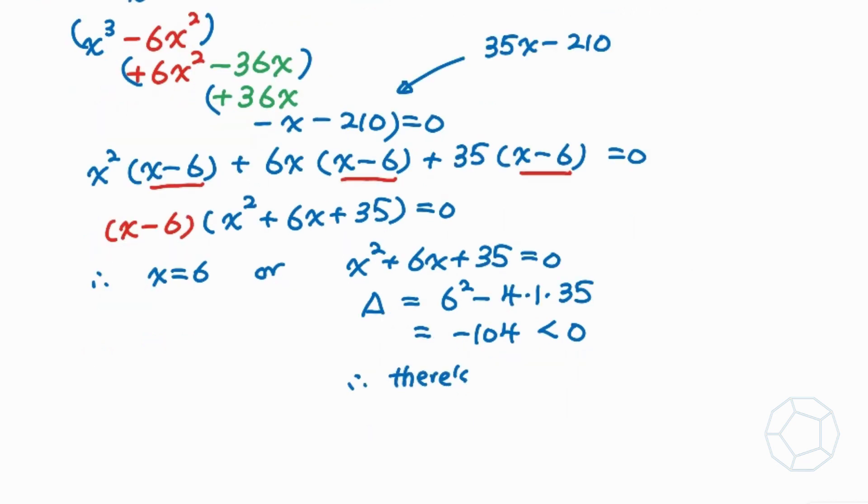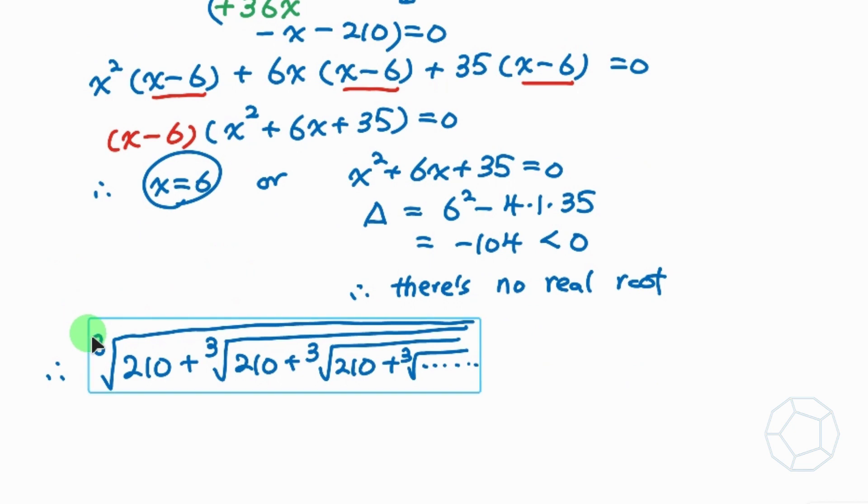Therefore there's no real roots of the quadratic equation. In other words, there's only one real root of the cubic equation which is x is equal to 6. Finally, the expression cube root of 210 plus the cube root of 210 up to infinity is equal to 6, and it happens that this six is actually three plus two plus one plus zero.